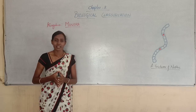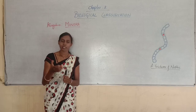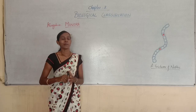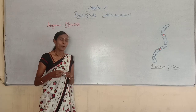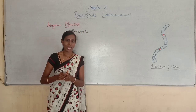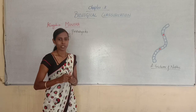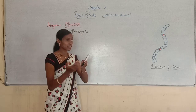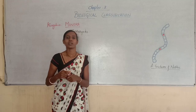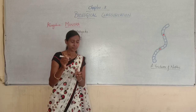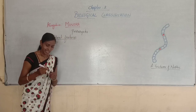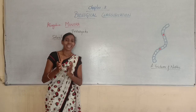Kingdom Monera is the kingdom of prokaryotes. As I mentioned in the previous class, the one and only kingdom which includes prokaryotes is Kingdom Monera. Prokaryotes can be seen only in Kingdom Monera. Now we will see the salient features of this kingdom — the unique common features shared by all organisms in Kingdom Monera.